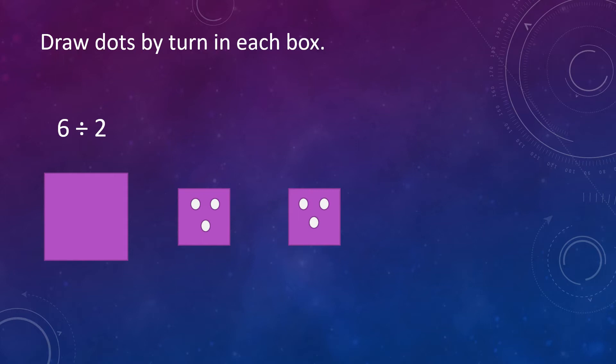Each box has three dots. So, 6 divided by 2 is equal to 3. This means 2 can be subtracted three times from 6. Dividing by 2 gives half the number — 3 is half of 6.